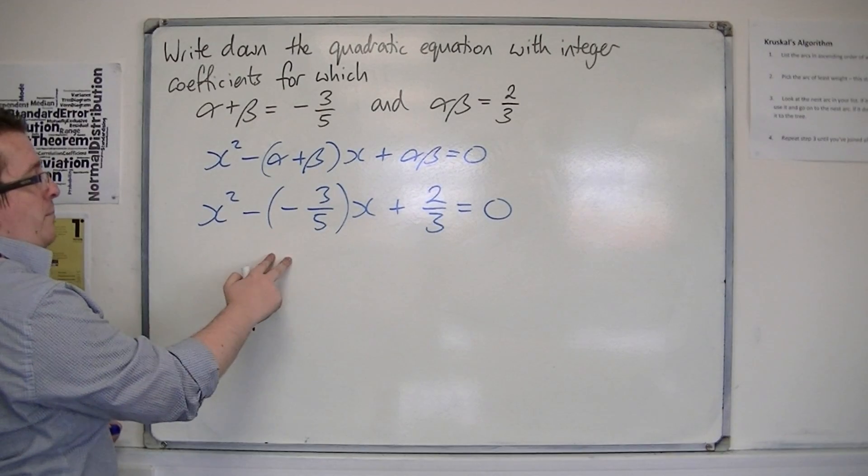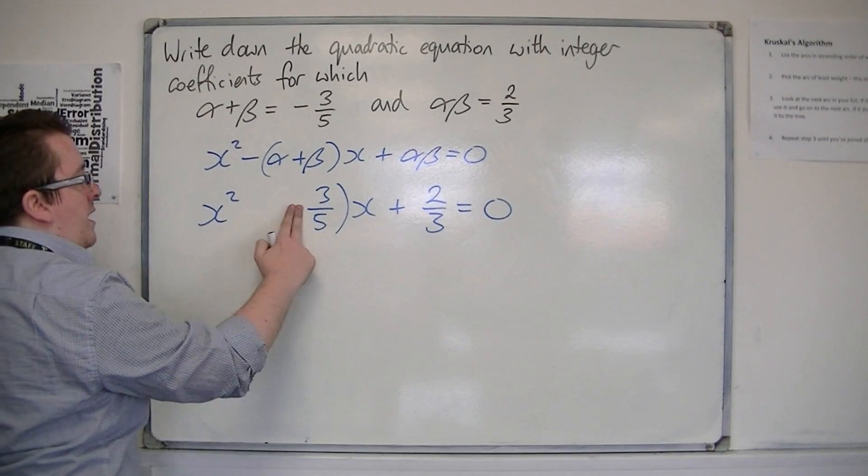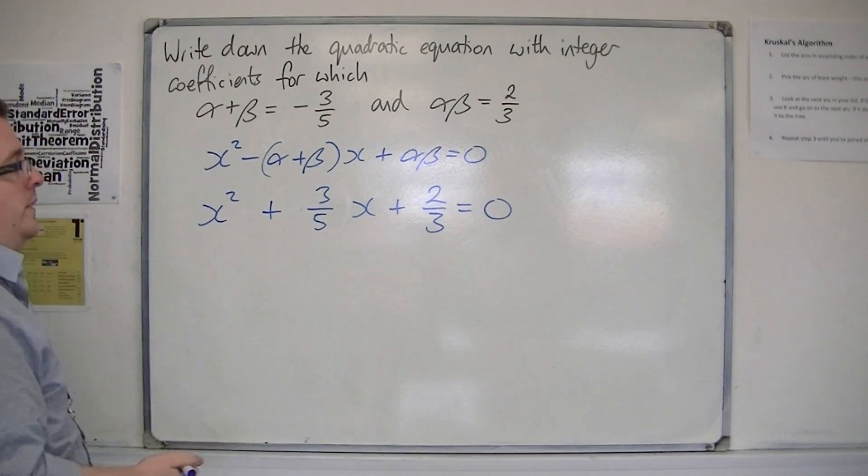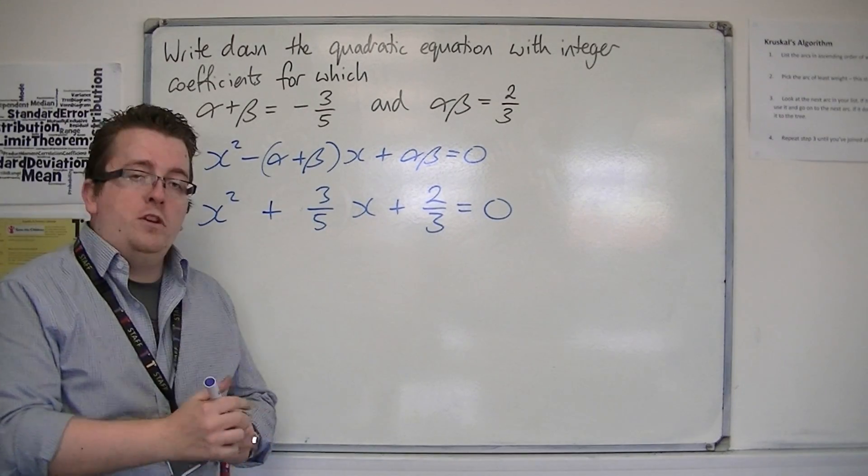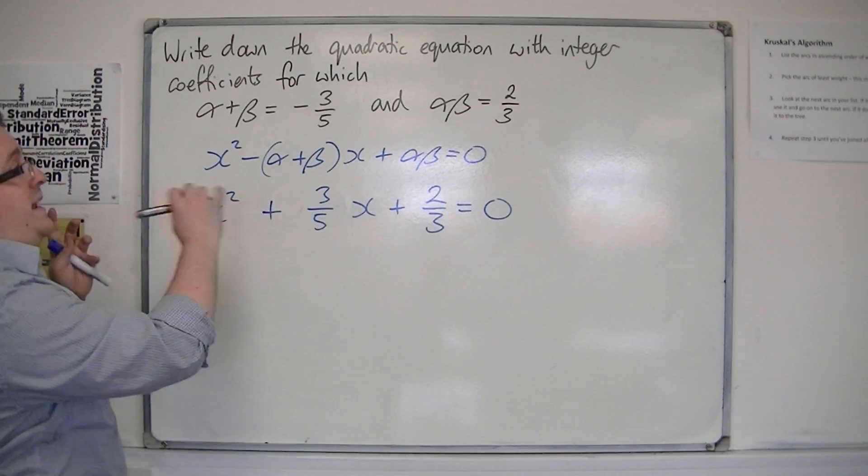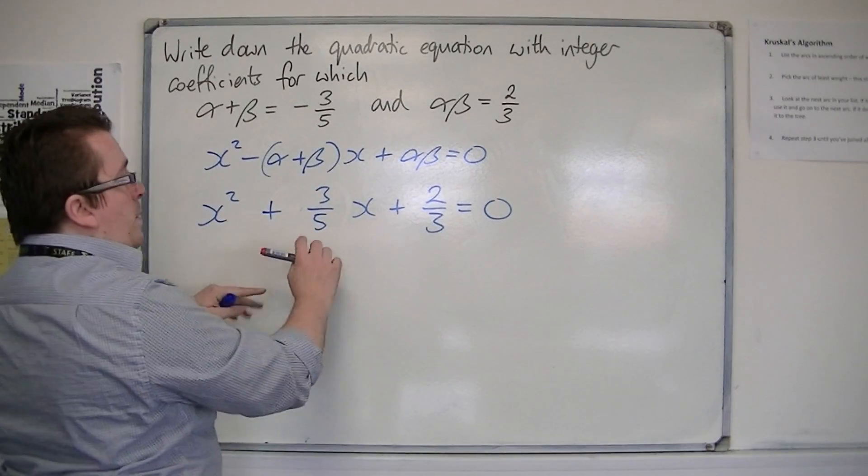So the minus minus three-fifths can become plus three-fifths x. And then you can multiply through because you're going to need to make it with integer coefficients, multiplied through by...